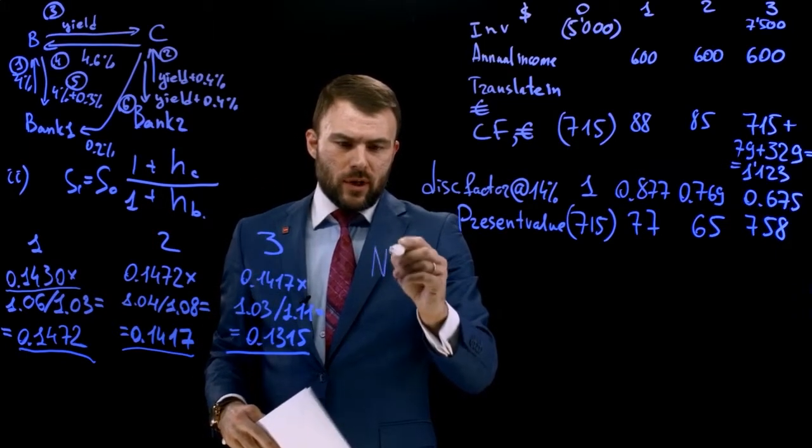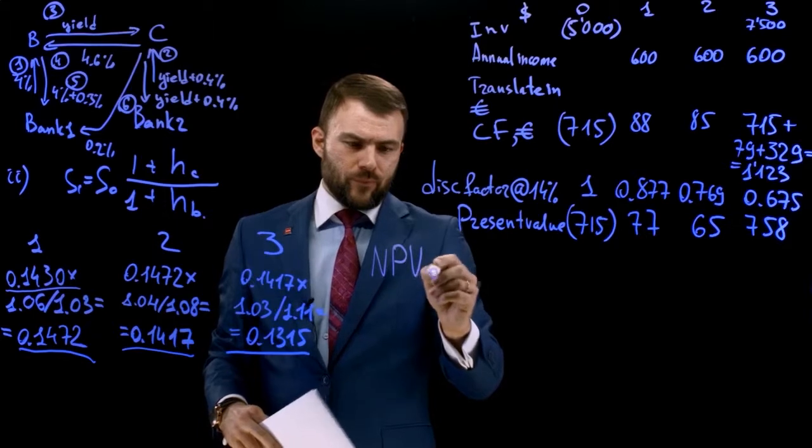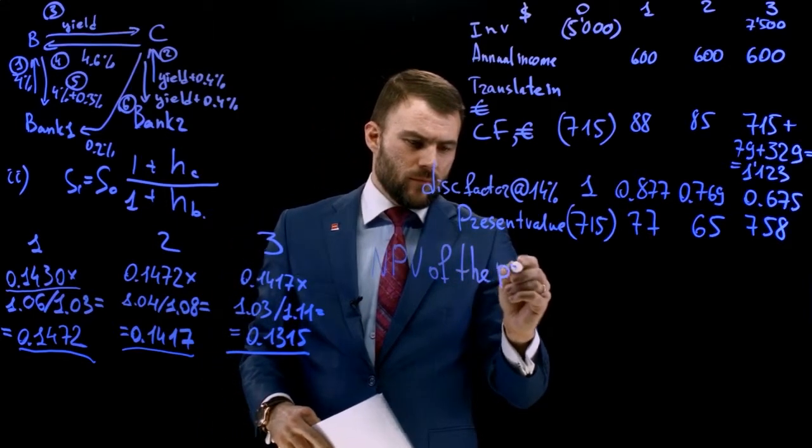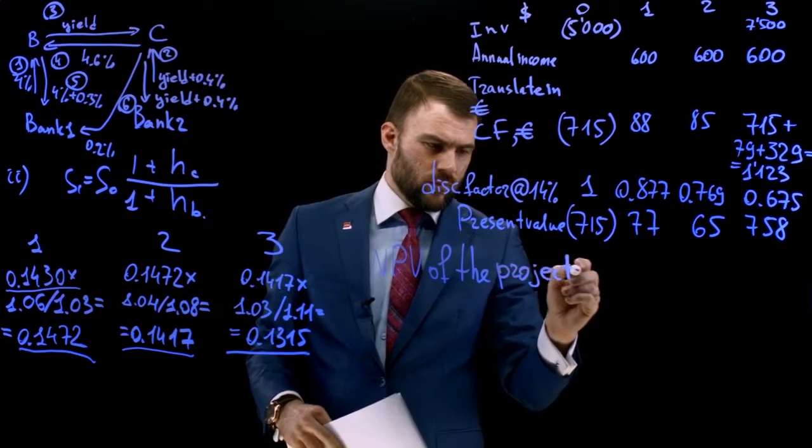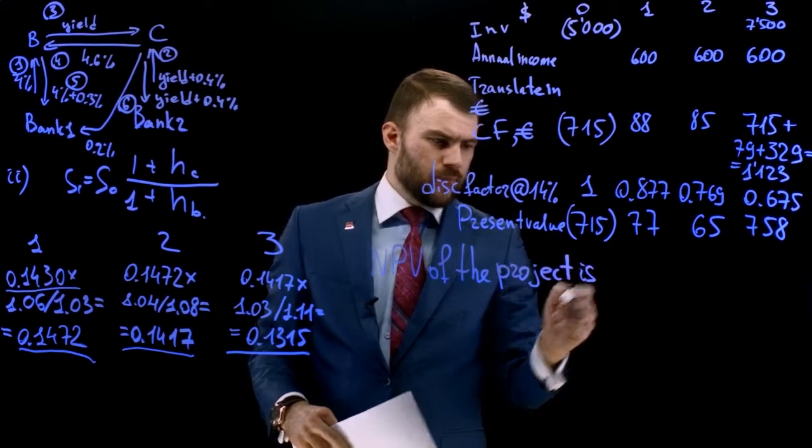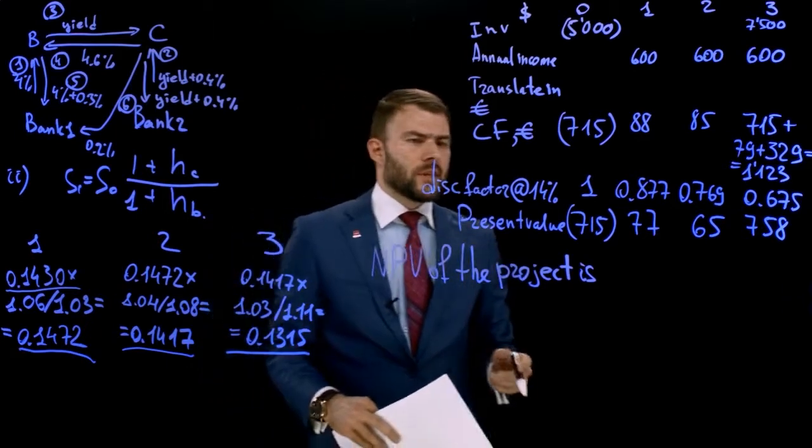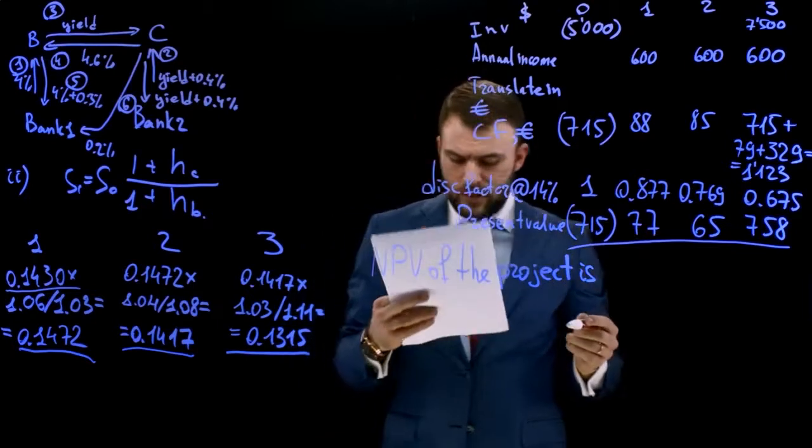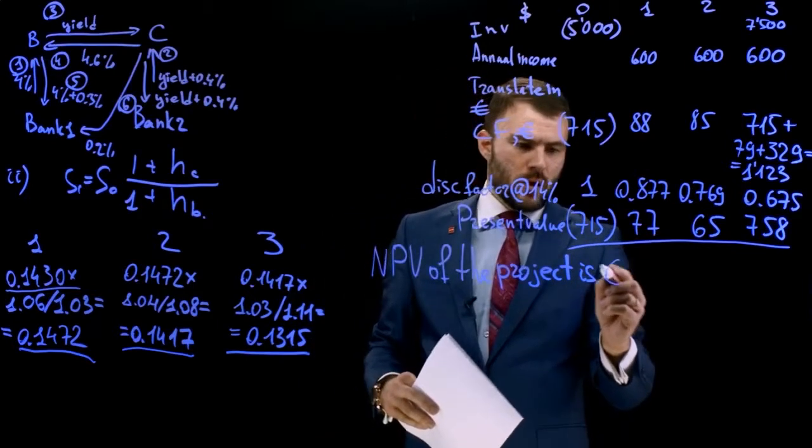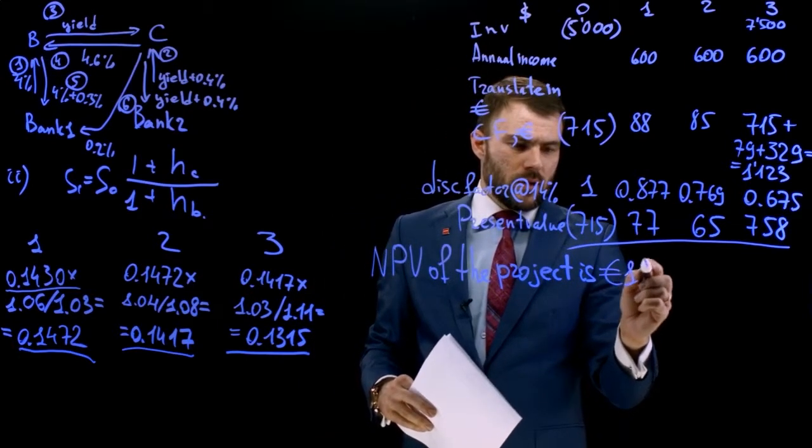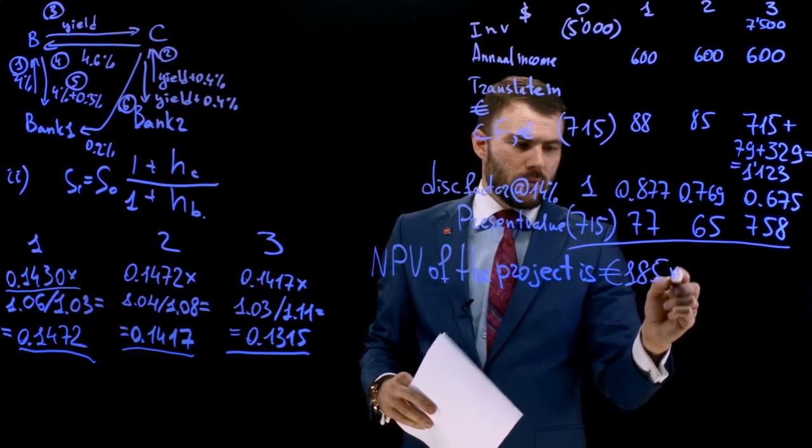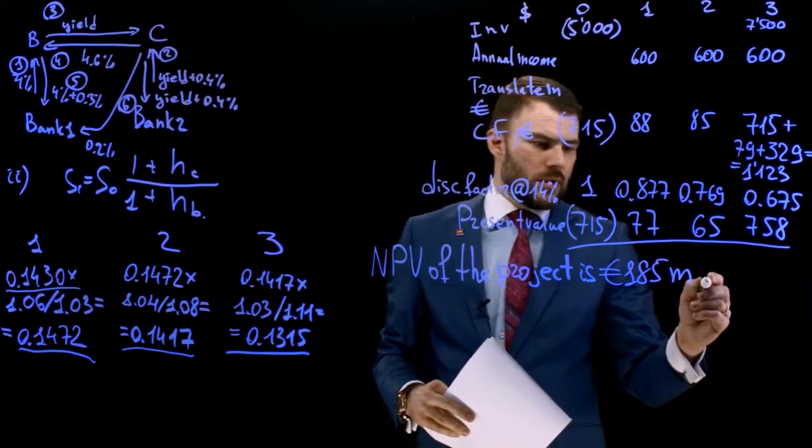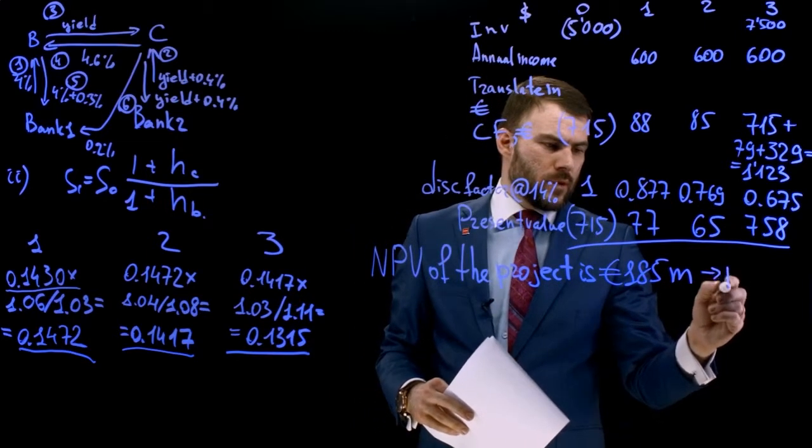So NPV of the project is positive, negative. Summarizing this cash flow, we'll receive total amount 185 million euro. NPV of the project is positive.